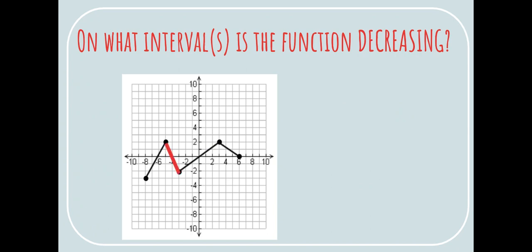It's also decreasing on two intervals. Here it's decreasing from negative 5 to negative 3, and then again from 3 to 6. Once again at a particular point, it cannot be neither increasing nor decreasing, so these are open parentheses.